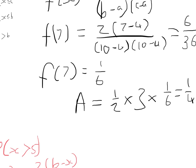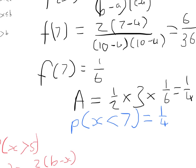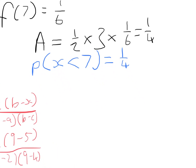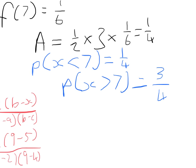Therefore P(X < 7) = 1/4. But what we want is P(X > 7), so since P(X < 7) is 1/4, then P(X > 7) must necessarily be 3/4.